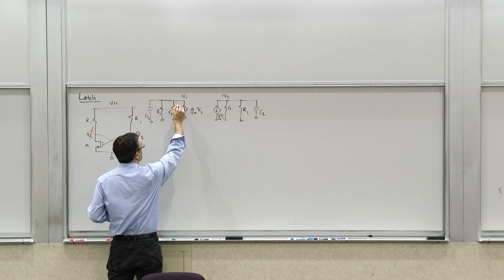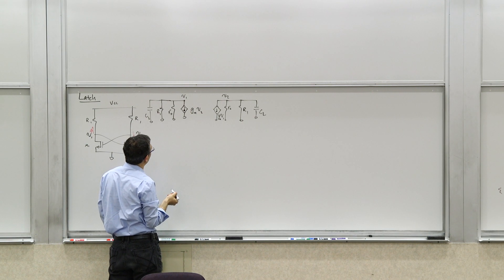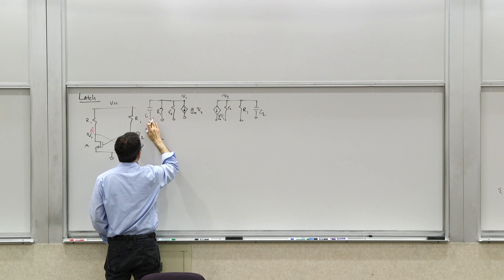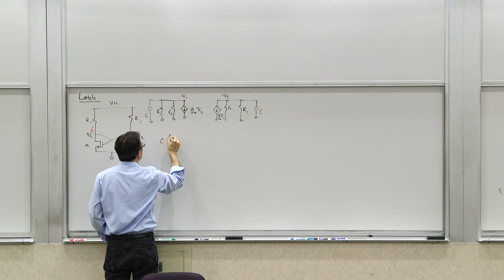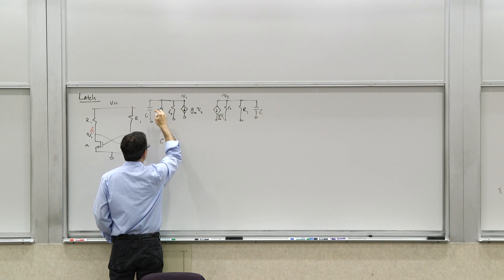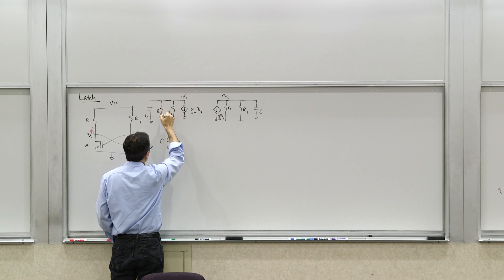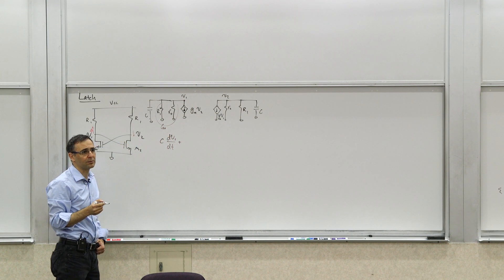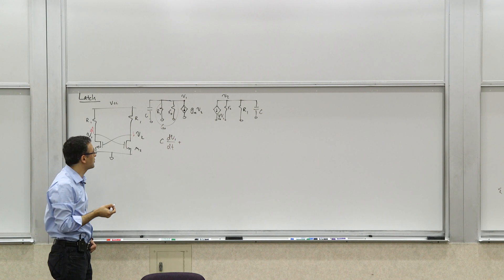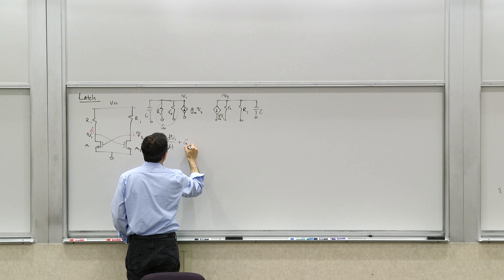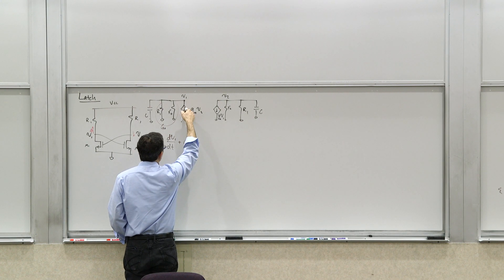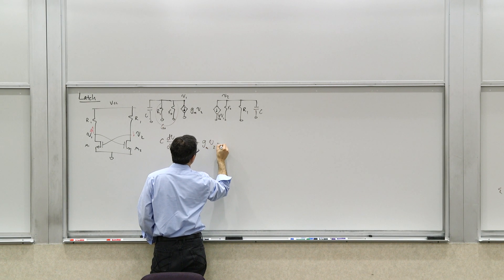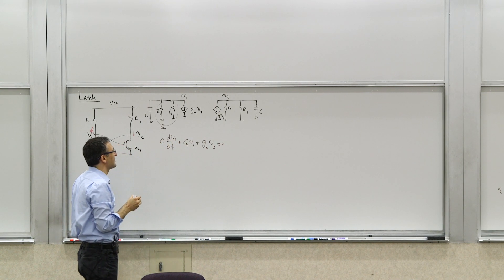Now, you can write the KCL at this node. If you write KCL at node one, what do you have? You have the current through this thing, which is given by C, let's call it just C. I'll make things simpler. C dV1 over dt. That's the current through the capacitor. Plus the current through the two resistors. Let's combine them. Let's call this G0 or RO, capital G0. It's a parallel combination of those, the conductance associated with that. So it would be G0 V1. Plus the current through the dependent current source, which is GM V2 equals zero.